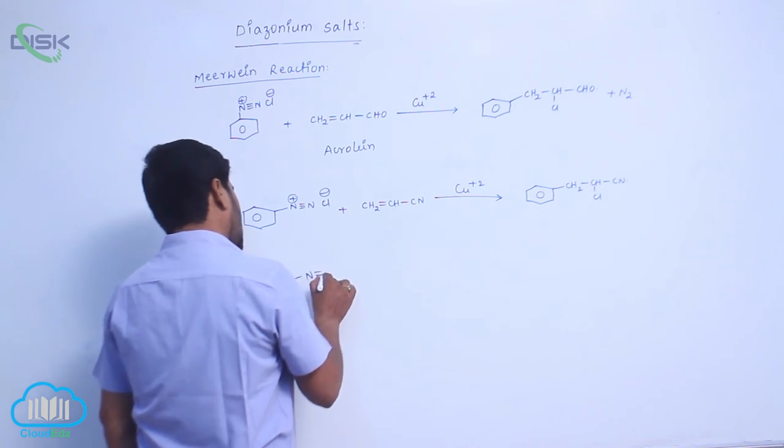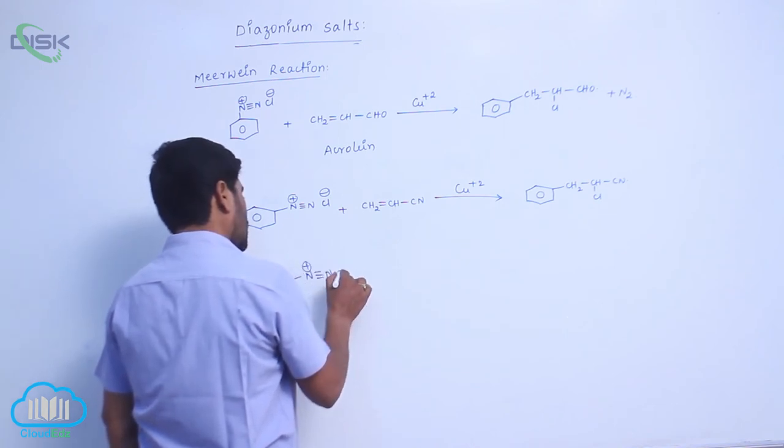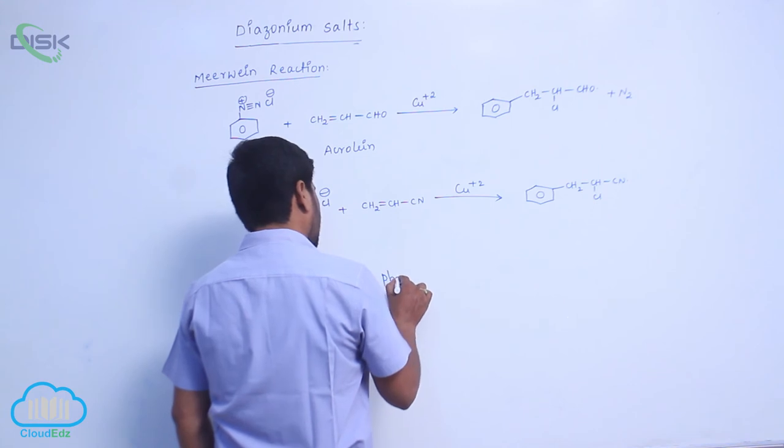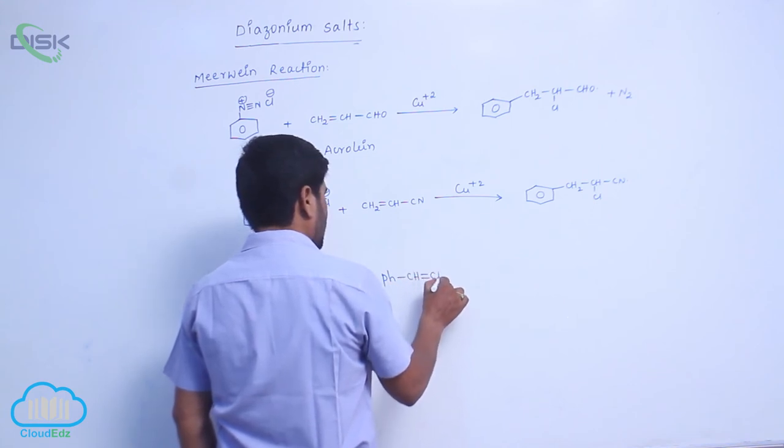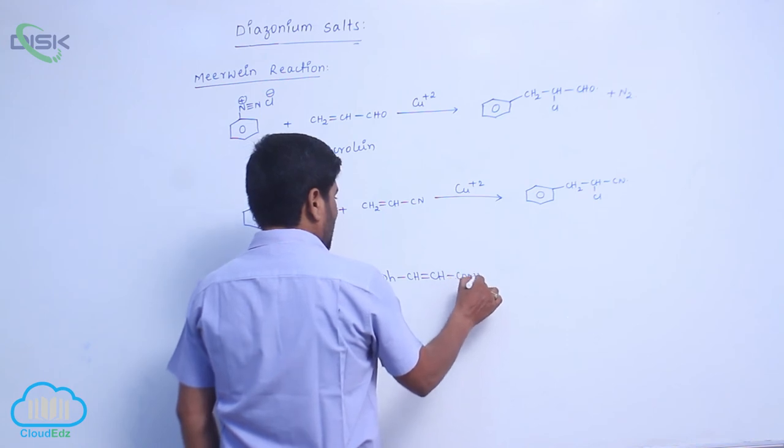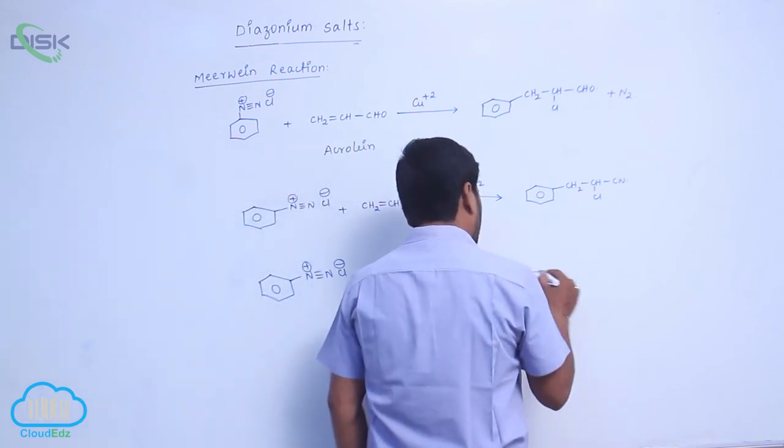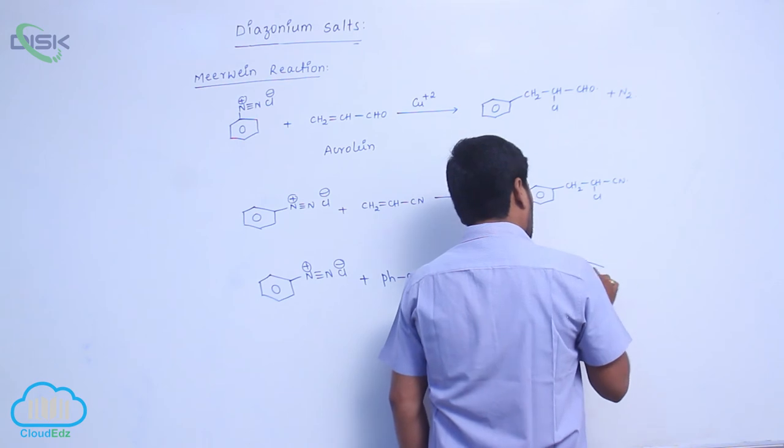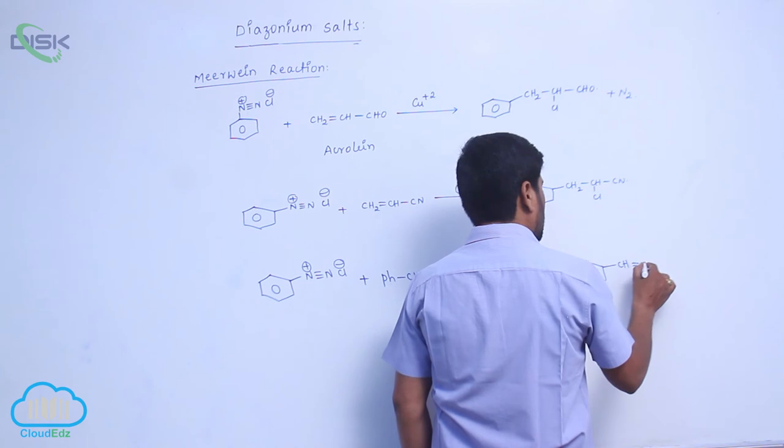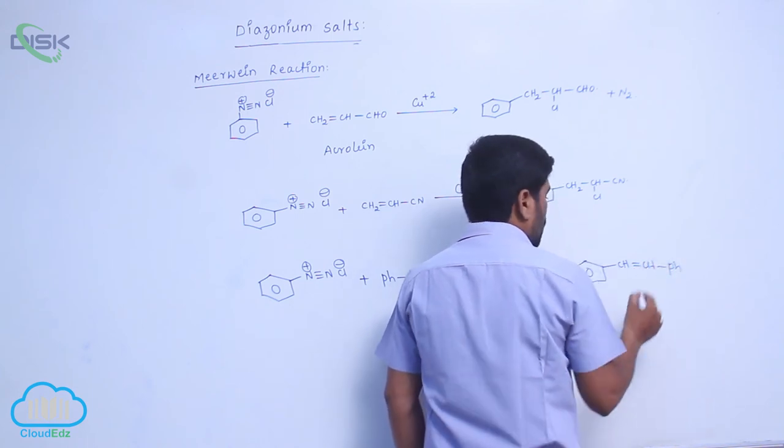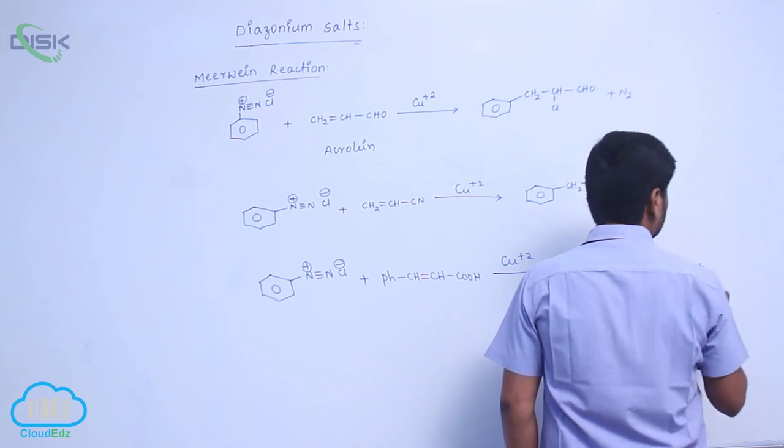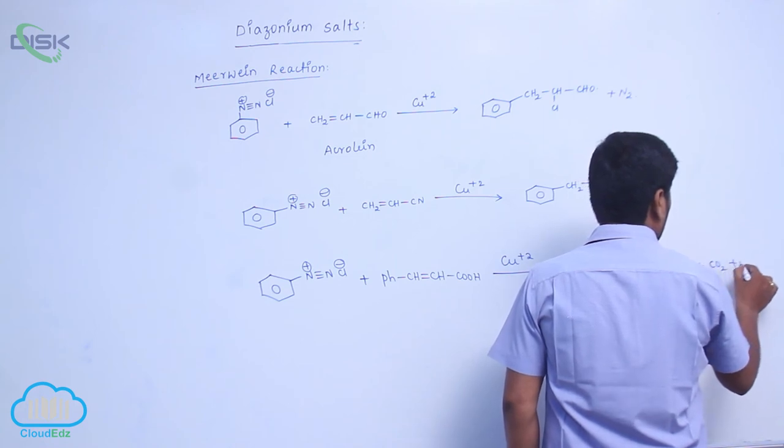When Benzene Diazonium Chloride reacts with cinnamic acid in presence of copper as a catalyst, loss of CO2, CH double bond... N2 molecule.